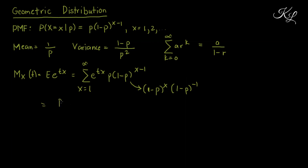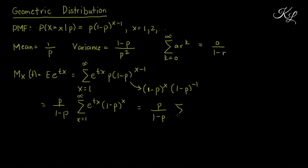We get p over (1-p) times the summation of e^(tx) times (1-p)^x from x=1 to infinity, which equals p over (1-p) times the summation of [e^t (1-p)]^x from x=1 to infinity. Comparing this with our geometric series formula, we set a = 1 and r = e^t (1-p), with k = x.